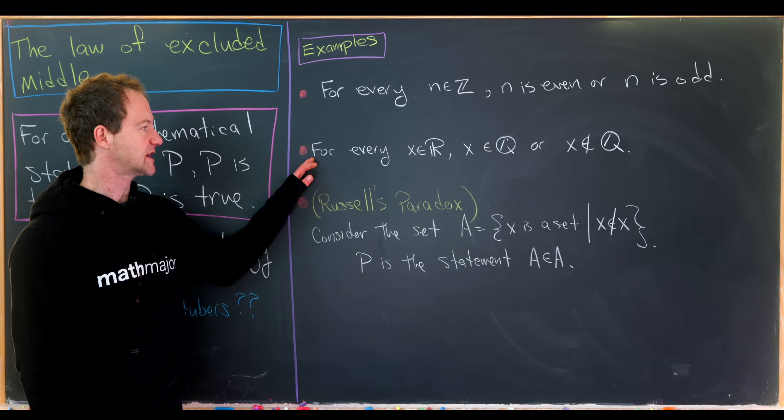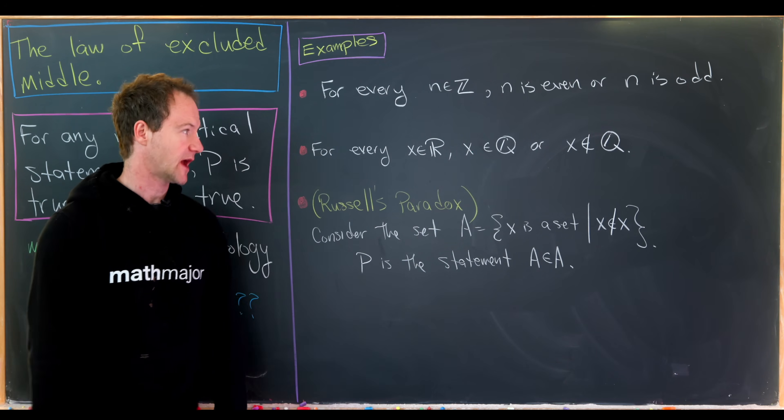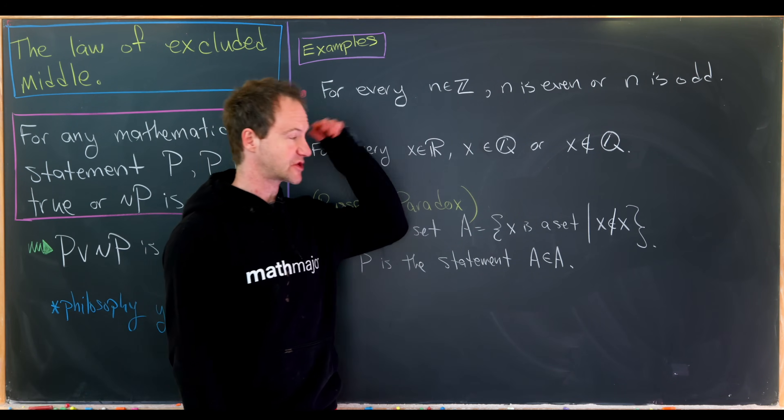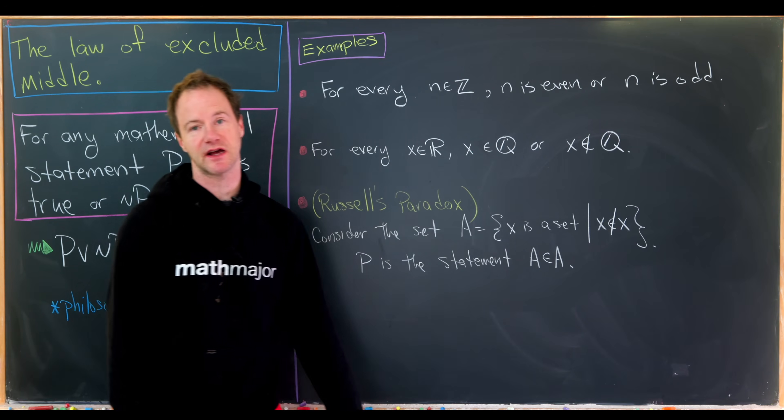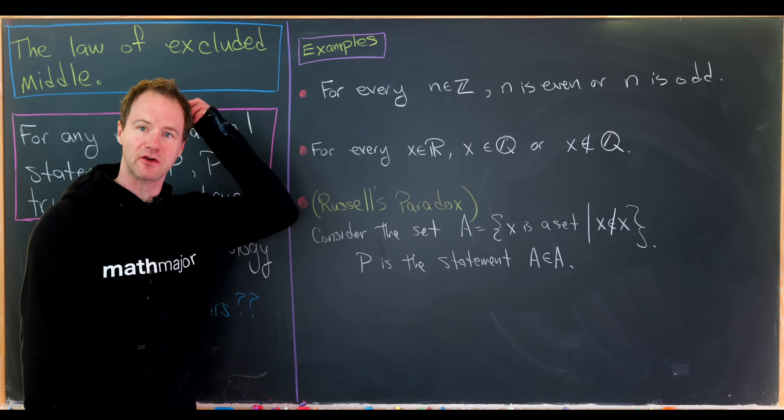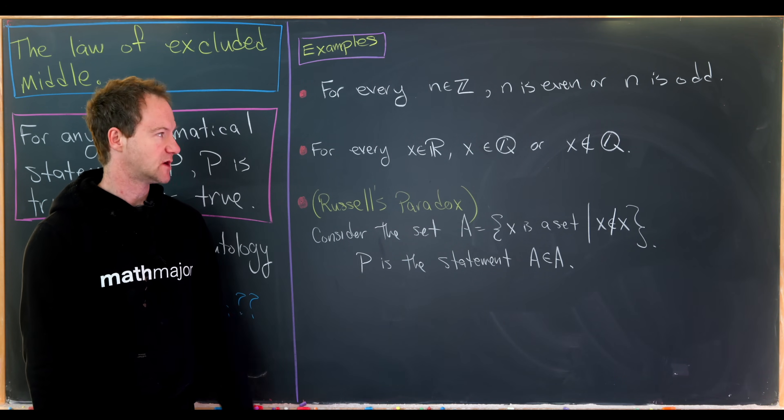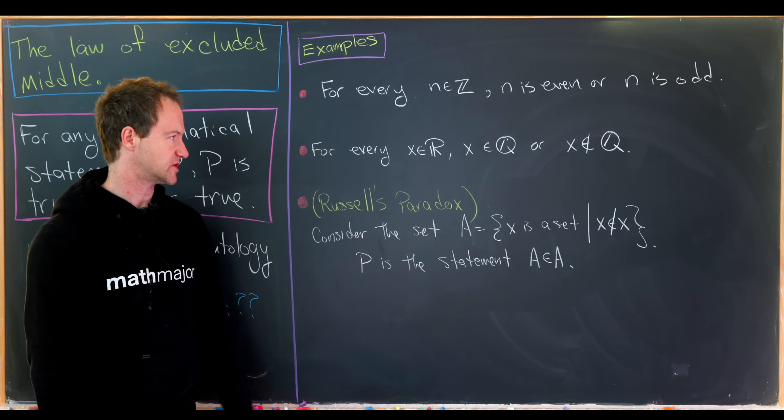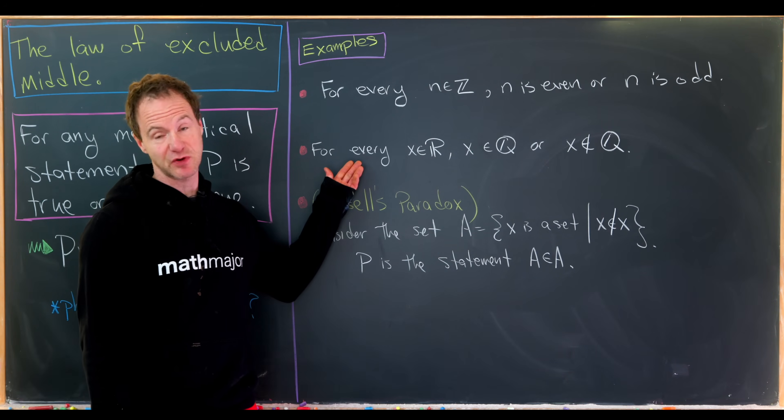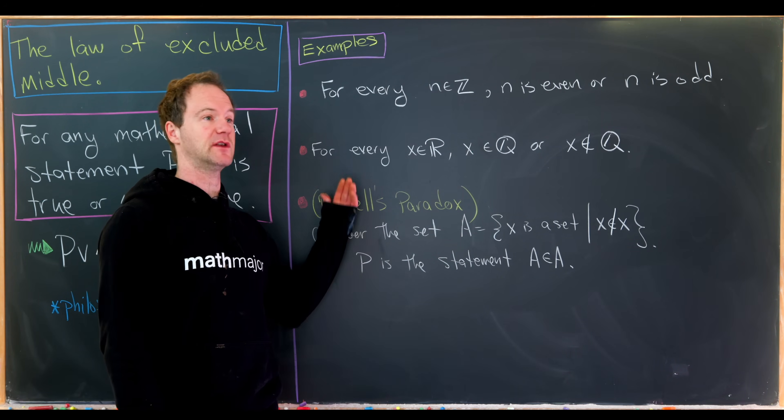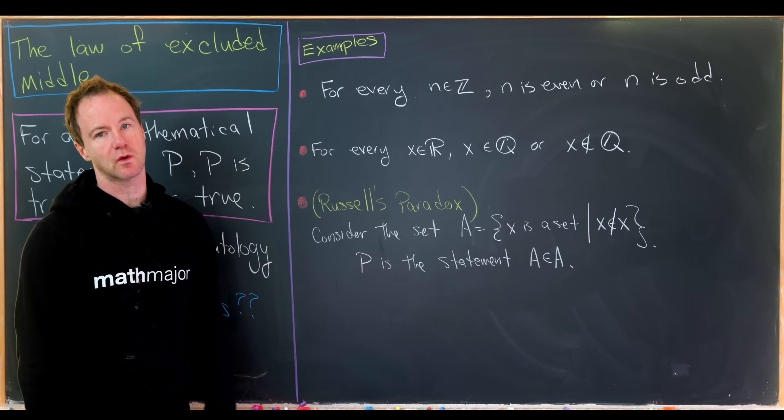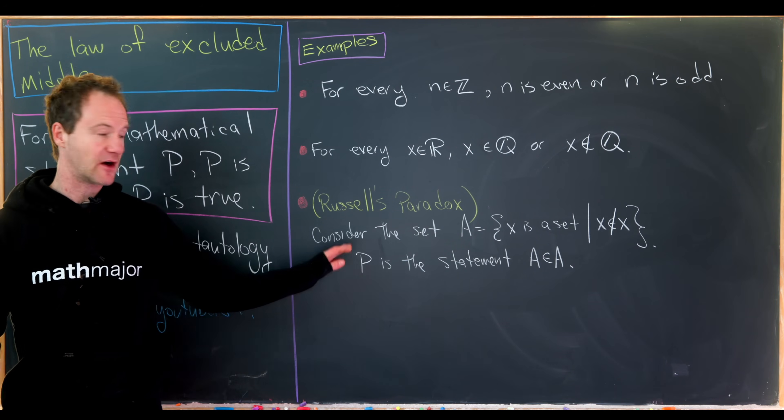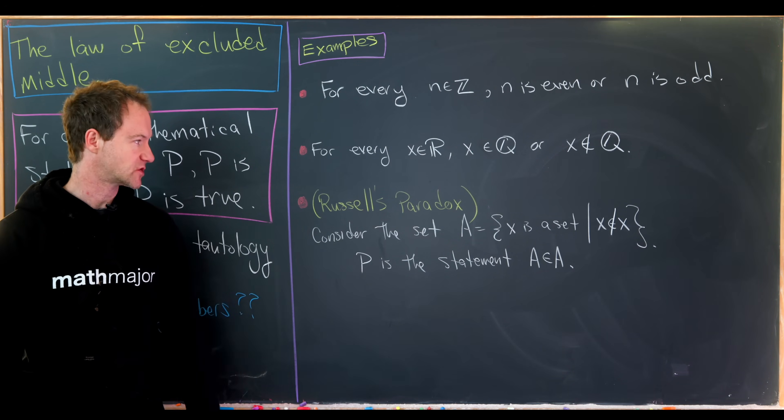So the next one, for every real number x, x is a rational number or it is not a rational number. Recall that means it's an irrational number. So how do you become a rational number? Well, you are a ratio of two integers. So I think this is pretty clear too. Either a real number is a ratio of two integers or it is not. Now the next one is a little bit more controversial.